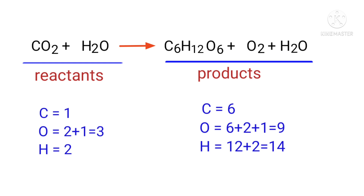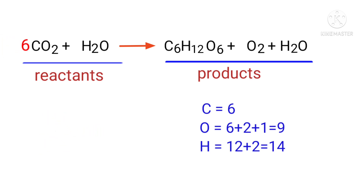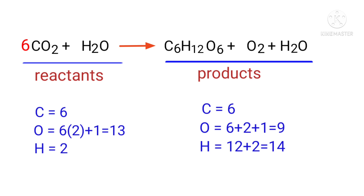In this equation we need to balance the carbon atoms first. To do this we need to put a coefficient of 6 in front of CO₂. The carbon atoms are now balanced.